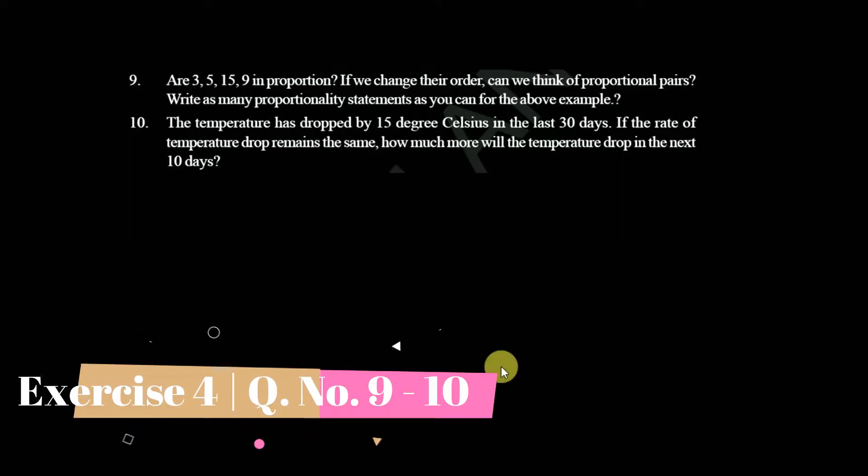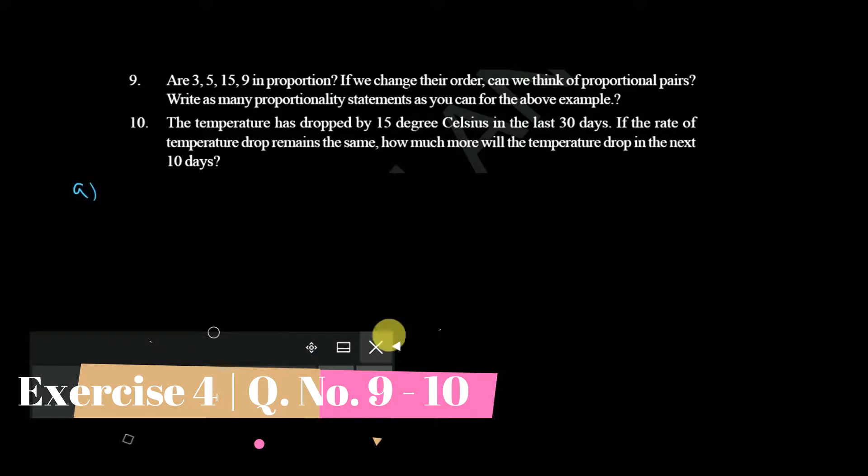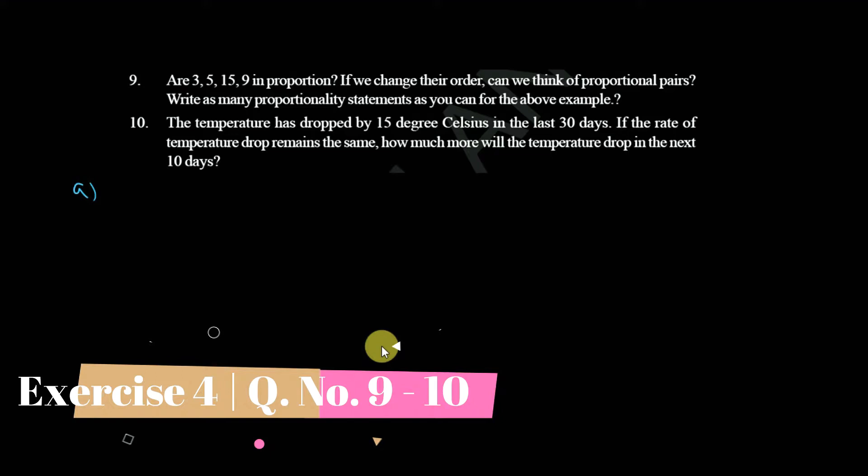In this question we are going to discuss the 9th question. So here 3, 5, 15, 9 are in proportion. If we change their order can you think of proportional pairs? Write as many proportionality statements as you can for the above example.